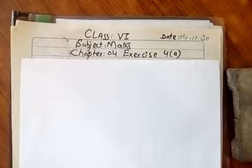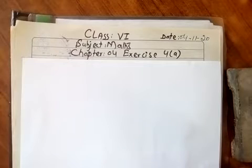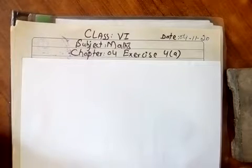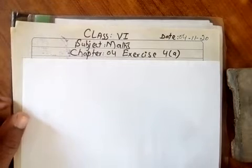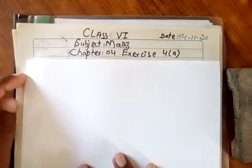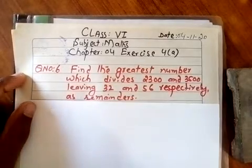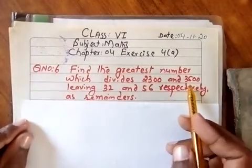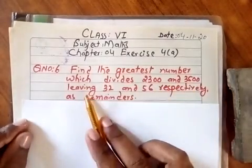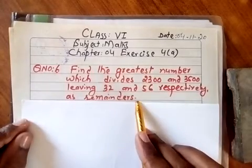Assalamu alaikum, good morning dear students of Class 6. Here is your math teacher, and happy blessed Friday. Today we are going to solve another question from Exercise 4a. The question says: Find the greatest number which divides 2300 and 3500 leaving 32 and 56 respectively as remainders.